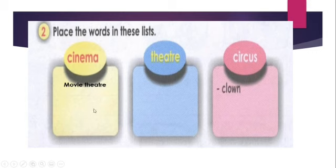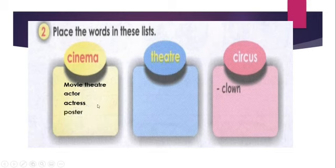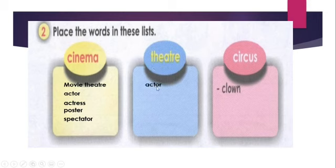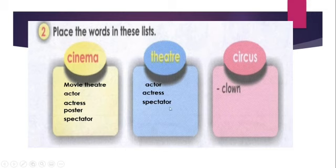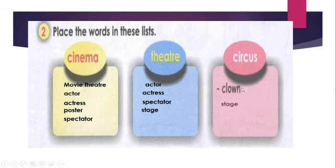Can you tell us what other words we can include here? Cinema: actor — when you have actor, you always have actress — poster, spectator. That's category number one. Category number two — theatre: actor, actress, spectator, and stage, or the setting, the place where actors act. Circus: sometimes we can have different words — we can also have posters for theatre or circus. So for circus we have clown, stage, poster, spectator.